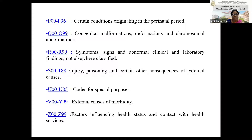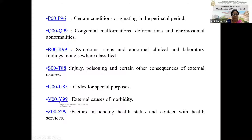The series R00 to R99 includes symptoms, signs and abnormal clinical and laboratory findings not elsewhere classified. S00 to T88 includes injury, poisoning and certain other consequences of external causes. U85 includes codes for special purposes and V00 to Y99 includes external causes of morbidity. Z00 to Z99 includes factors influencing health status and contact with health services. This entire alphanumeric series covers almost all diseases, and each series has a hyperlink so if you open it on the internet you will get the details of each series.